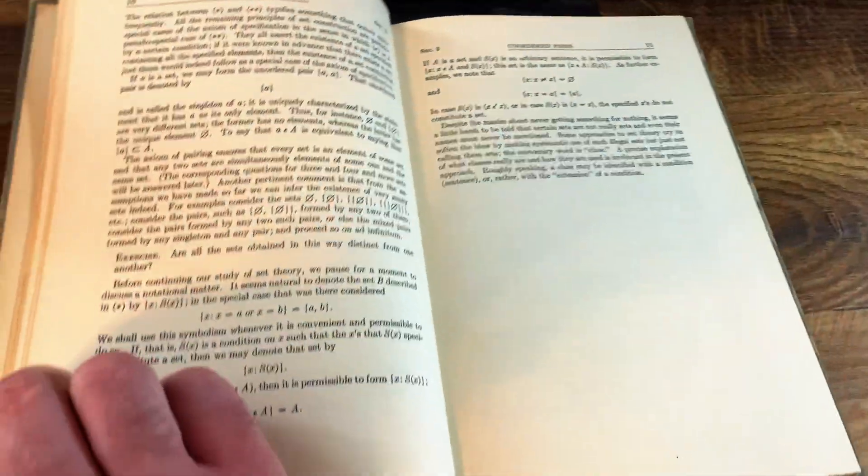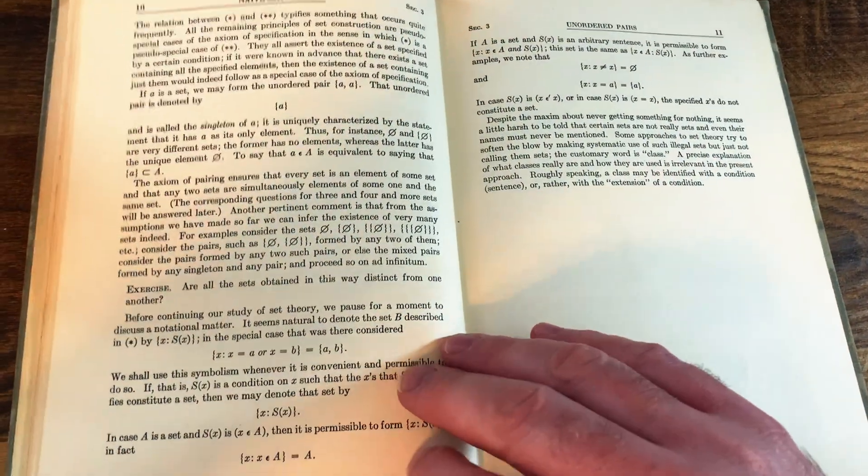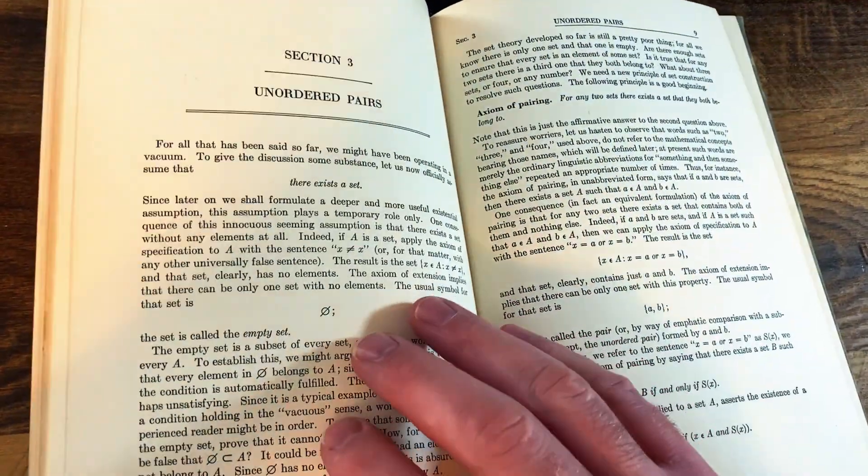This is what we call a partial ordering in mathematics. When we have a set of objects, we can define a kind of ordering relation on certain pairs of objects, but that ordering might not apply to all pairs, such as, say, waffles vs. pizza.